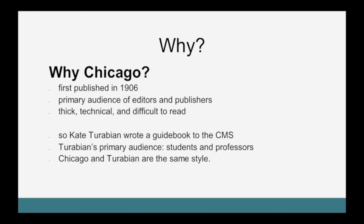The Chicago Manual of Style was first published in 1906 with a primary audience of editors and publishers. The book is thick, technical, and somewhat difficult to read. So a couple decades later, Kate Turabian wrote a guidebook to the CMS. Turabian's primary audience was students and professors, so her book is much easier to read — not quite as thick and technical, but it includes all the relevant information that students and professors might need for their writing and citation, and leaves out the more technical details that editors and publishers need.